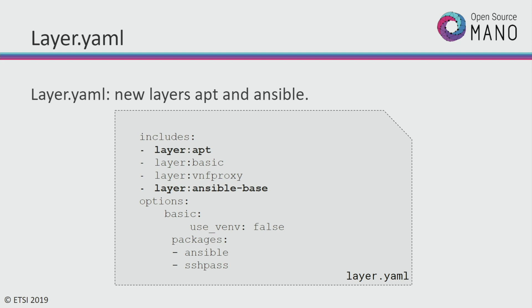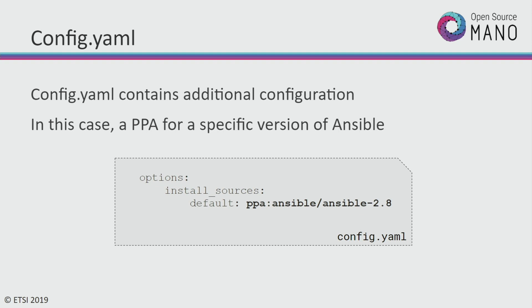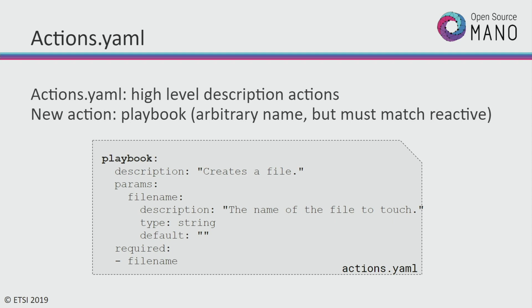I wanted to show how you could use the app layer to install arbitrary PPAs — for example, using Ansible 2.6. But for today in this release, we won't actually be using the app layer. The config YAML in the example you'll be given is actually empty, but this is a way of showing how you can install arbitrary packages from different PPAs, or a specific version, through this app layer.